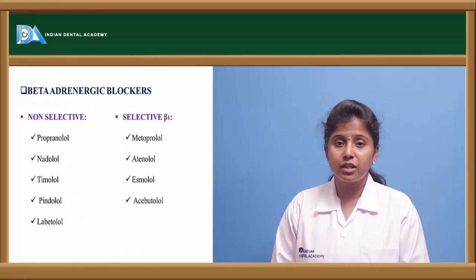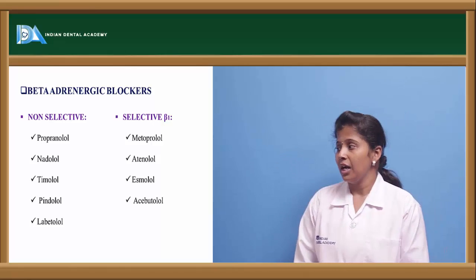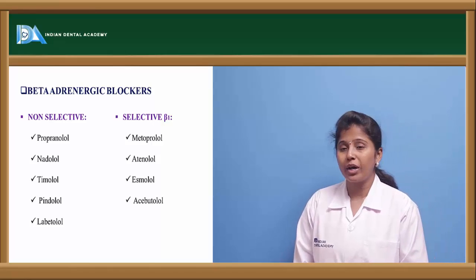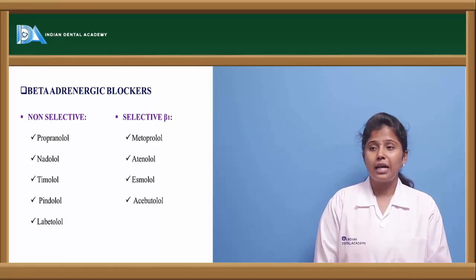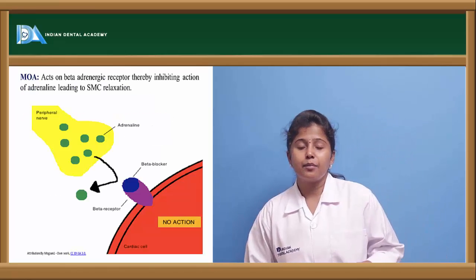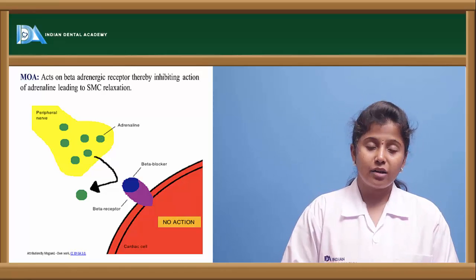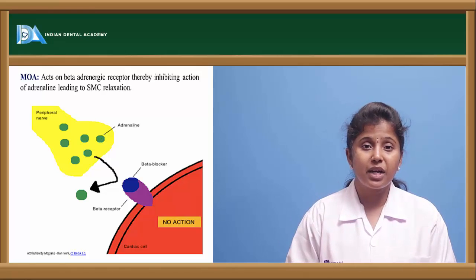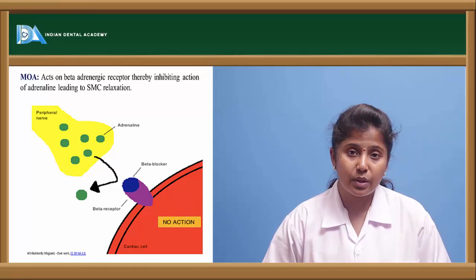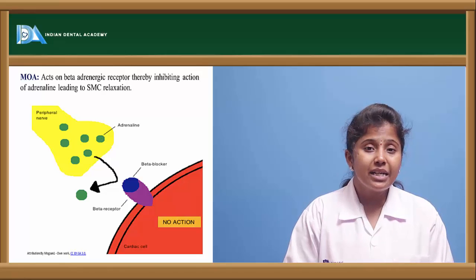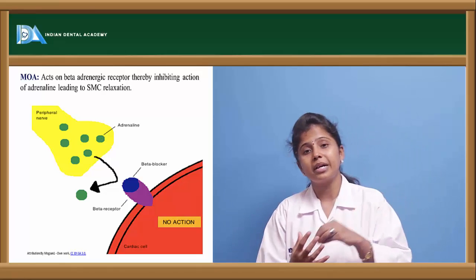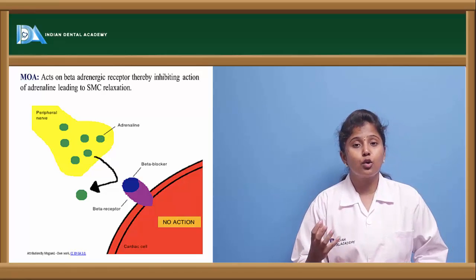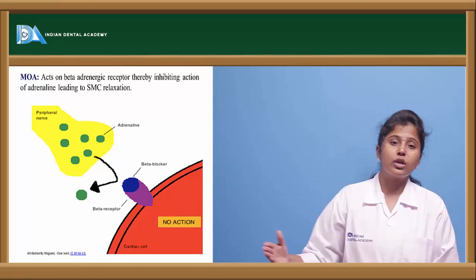Beta-adrenergic blockers are the next class. Non-selective agents include propranolol, nadolol, pindolol, timolol, and labetalol. Selective beta-1 agents include metoprolol, atenolol, esmolol, and acebutolol. These drugs prevent adrenaline or noradrenaline from binding to beta receptors; since adrenaline binding causes blood vessel contraction, blocking it prevents over-contraction and maintains proper blood flow.